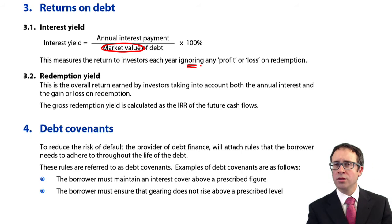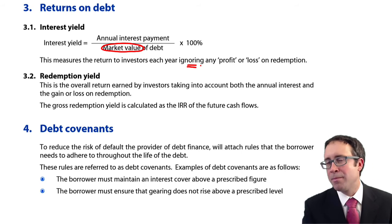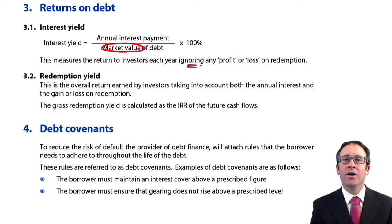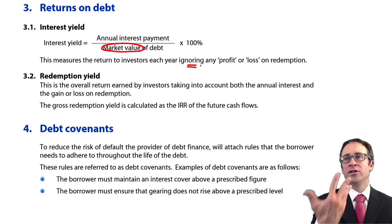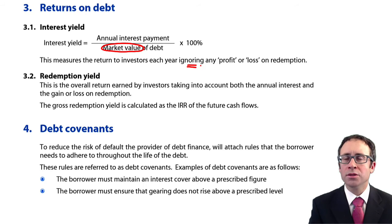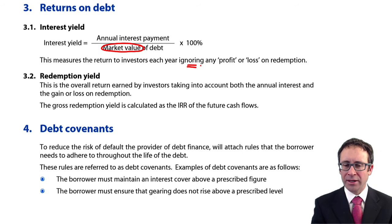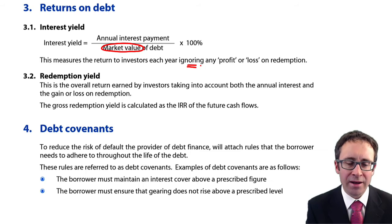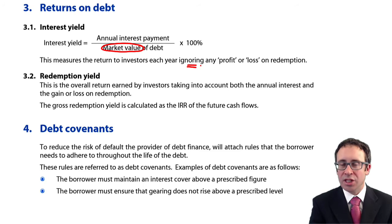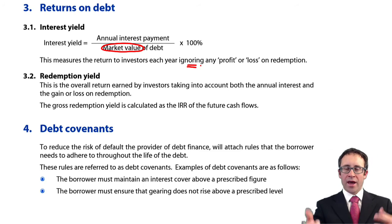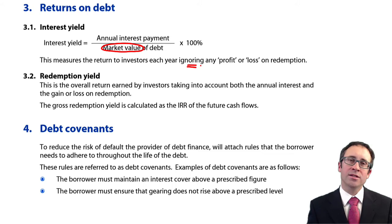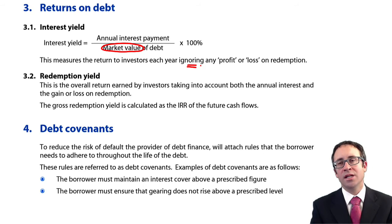If you look at an interest yield on your zero coupon bonds, it's zero, because you have no annual interest. It doesn't matter what the market value of the debt is — your interest yield is zero. But we're still getting a return on the debt, because there will be a big gain on redemption of that zero coupon bond at the end of its life.